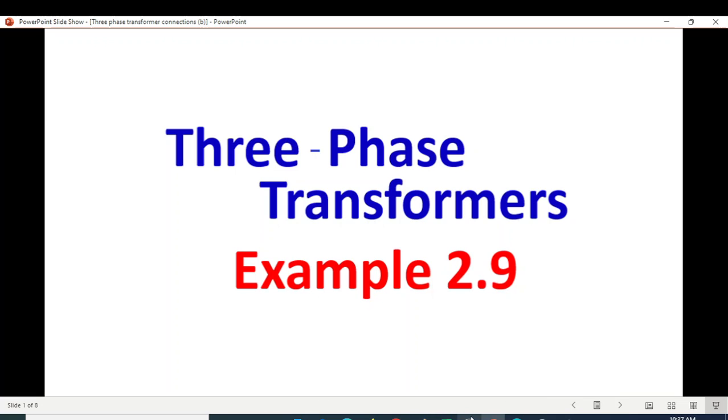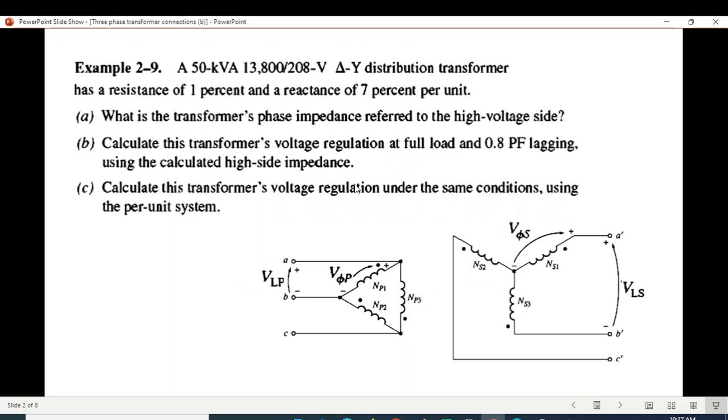About three-phase transformers, primarily Example 2.9. So straight away, the example: a 50 kVA, 13,800 to 208 volt delta-Y distribution transformer has a resistance of 1% and reactance of 7%. The data is given and we can solve three parameters in three questions.